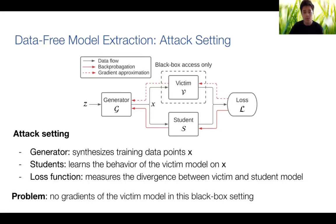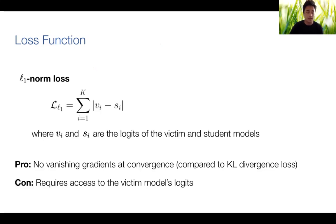We do have a problem though: the victim is only accessible via a black box, so we cannot compute gradients of it. Therefore, we need to use gradient approximation techniques. The loss function we use is different from knowledge distillation — we use the L1 norm loss, which is the L1 distance between the victim and the student logits in classification. The advantage is that we don't have vanishing gradients at convergence compared to KL divergence, the loss used in knowledge distillation. The drawback is that it requires access to the victim model's logits, but more details are included in the paper.